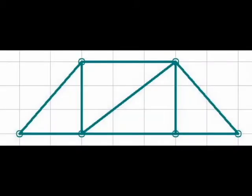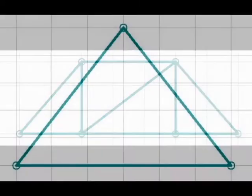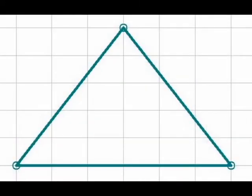What is a truss? A truss is a structure made of one or more triangles held together by straight members. The reason why triangles are used is because they are the most structural and stable shape.